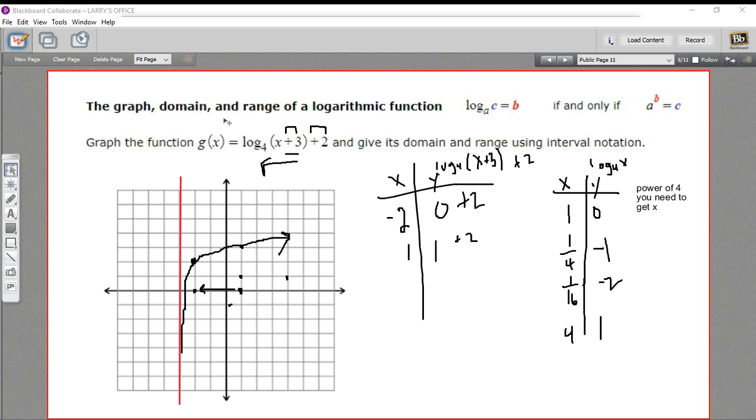There's one more part of this problem. We are being asked to figure out the domain and range of this function. So the domain, of course, is everything x can be. So we're talking about left and right. And this function never goes to the left of this line right here. So we start at negative 3 on the x values. And then we go as far as we want over. So this goes up to infinity. So this is our domain.